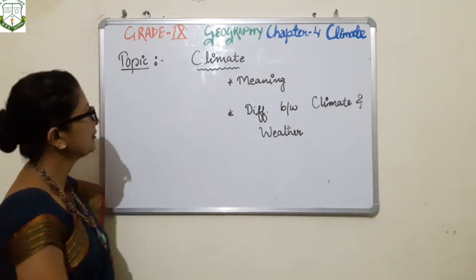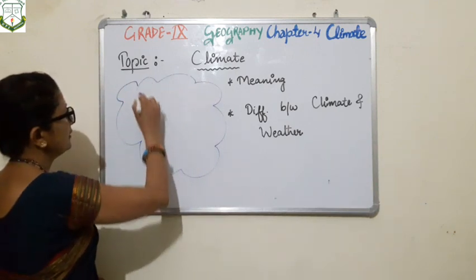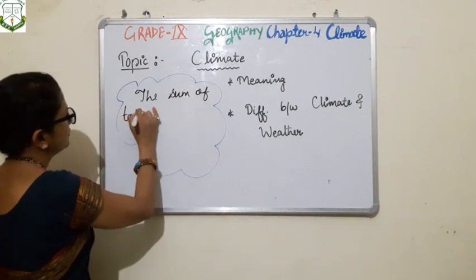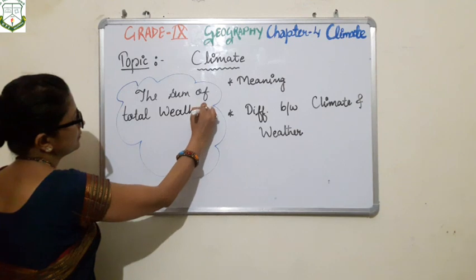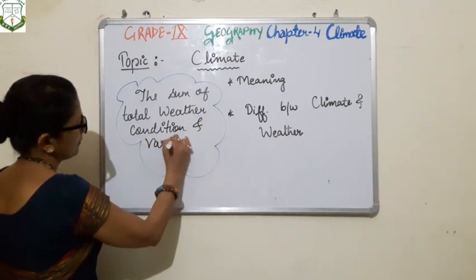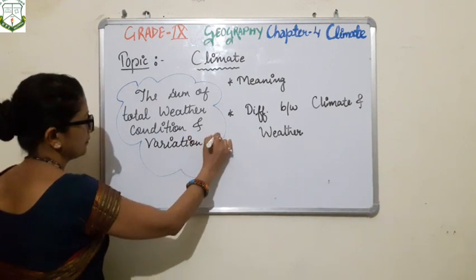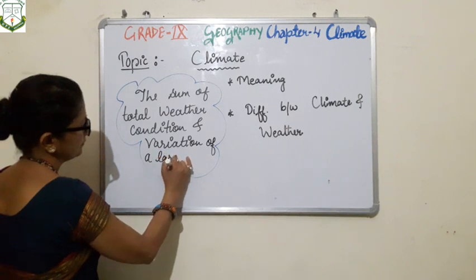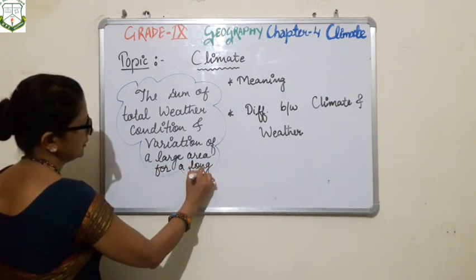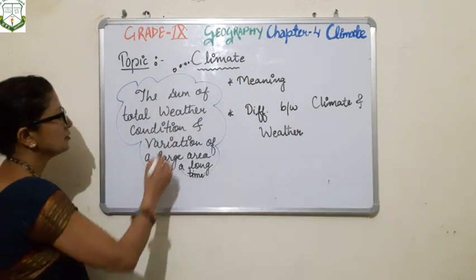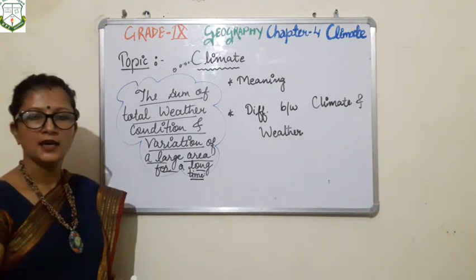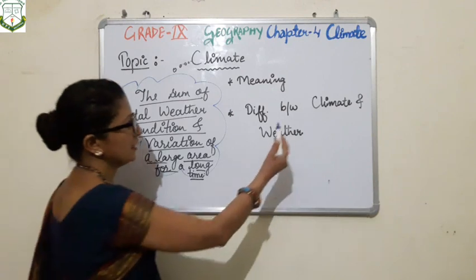The definition of climate says that the sum total of weather conditions and its variations over a large area for a long time period is called climate. So climate remains for a long time period over a large area. Now there is another word — weather — and there is a great difference between climate and weather, though these words seem very similar.